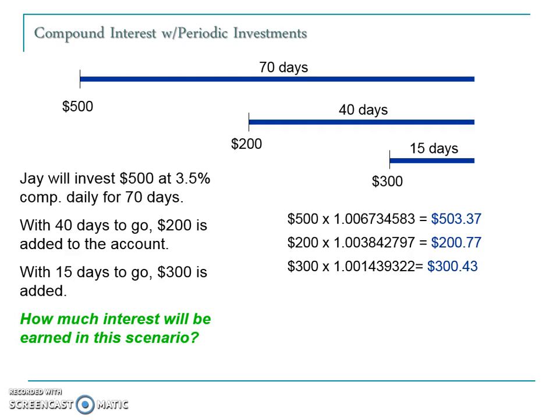This would be the amount each one of these has grown to, and the balance in the account is $1,004.57 when you add up these three transactions. We're not done though — it's asking how much interest is earned in this entire 70 days, recognizing not all the money has been compounding for the full amount of time. To do this we determine what the principal deposits were: $500 plus $200 plus $300 gives us $1,000. Subtracting the principal from the balance, the difference of $4.57 is the interest that this money earned in this account.